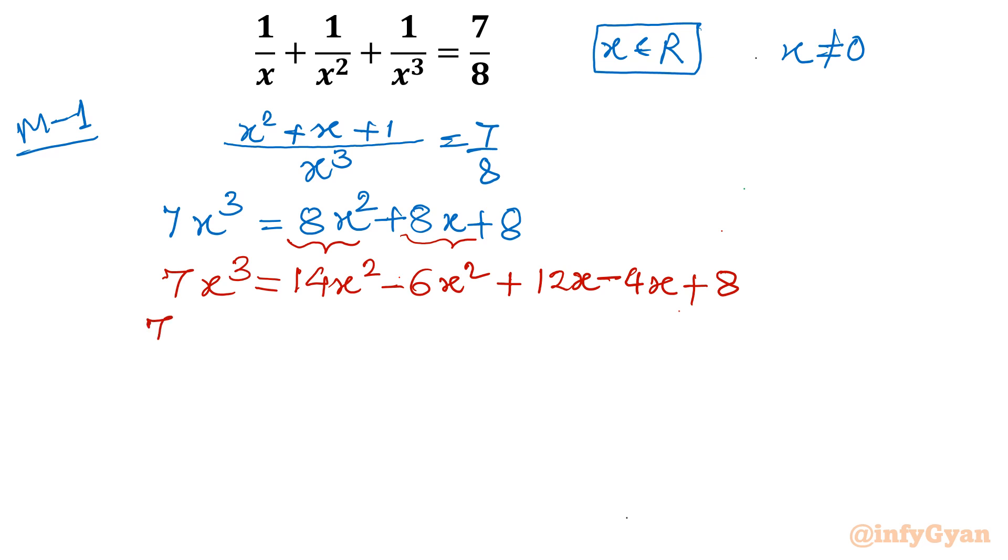Once you will be able to write this split, then this problem is very simple. Take all the terms to left: 7x cube minus 14x square plus 6x square minus 12x plus 4x minus 8 equal to 0. Now from first two terms I will take 7x square common out, so what is left is x minus 2 in the bracket. Now I will take 6x common out, what is left in the bracket is x minus 2. And if I will take 4 common from last two terms, I will get x minus 2 once again.